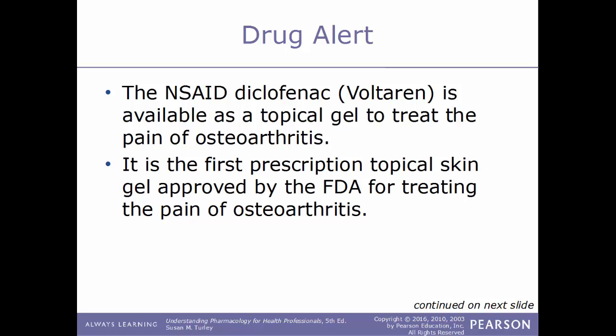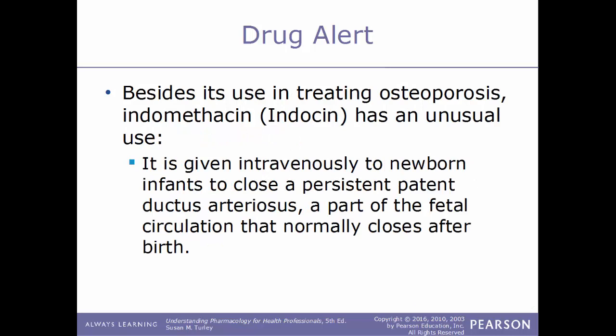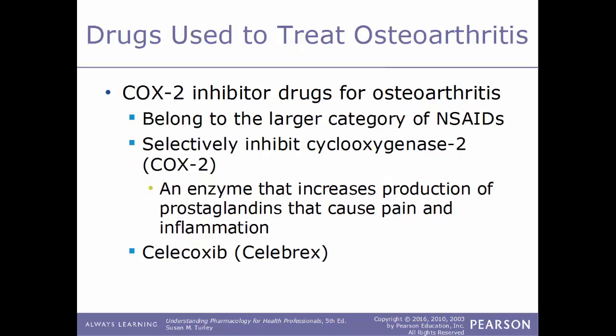Drug alert: the NSAID diclofenac is available as a topical gel to treat the pain of osteoarthritis — it was the first prescription topical skin gel approved for this use. Another drug alert: indomethacin (Indocin), besides treating osteoarthritis, has an unusual use — it is given intravenously to newborn infants to close a persistent patent ductus arteriosus, a structure found only in the developing fetus that should normally close after birth but sometimes requires medication or surgery.